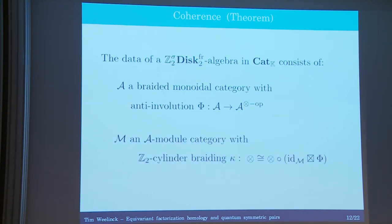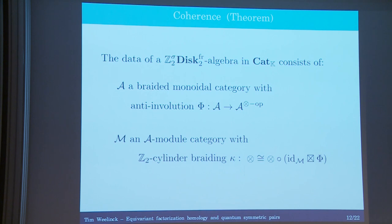I've shown a coherence theorem that says if you want to have a Z2 disk algebra in this two-category of categories, this is the data you need: a braided monoidal category with an anti-involution, and a module category which has what I call a Z2 cylinder braiding. I'll leave the coherences out for now, but I'll draw some pictures later so you see what kind of axioms this cylinder braiding should satisfy.